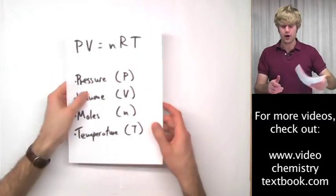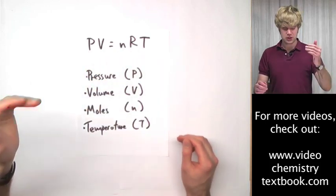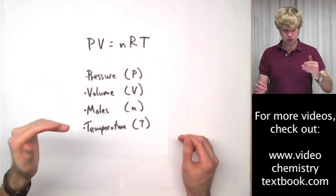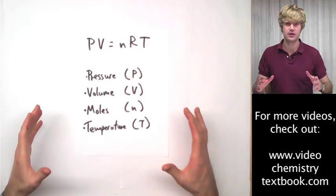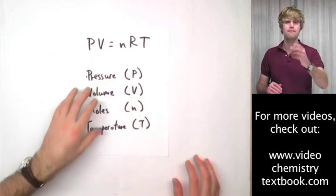So far, we've been using this equation here, PV equals nRT, which lets us solve for pressure, volume, moles, and temperature of a gas sample. If we know three of these variables, we can always figure out the fourth.